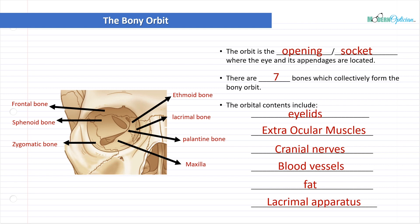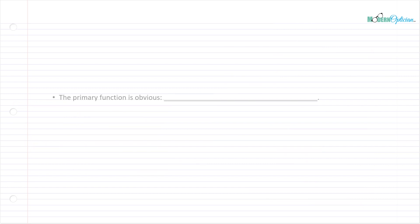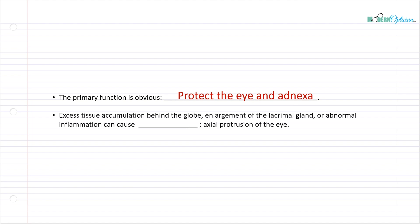So this is pretty much all you really need to know about the bony orbit. And it's actually probably more than most opticians do think of or know about it. So you're already kind of ahead of the curve in that sense. But why don't we look at why we need to know this? Well, first the primary function is obvious. You know, it's bones and usually bones protect. So it's protecting the eye and the adnexa. Another reason that you need to know this is just so that you're kind of understanding where certain ailments are coming from. A common ailment here is when excess tissue accumulates behind the globe from the enlargement of the lacrimal gland or abnormal inflammation for whatever cause. And it could cause a condition called proptosis. And that's the axial protrusion of the eye.